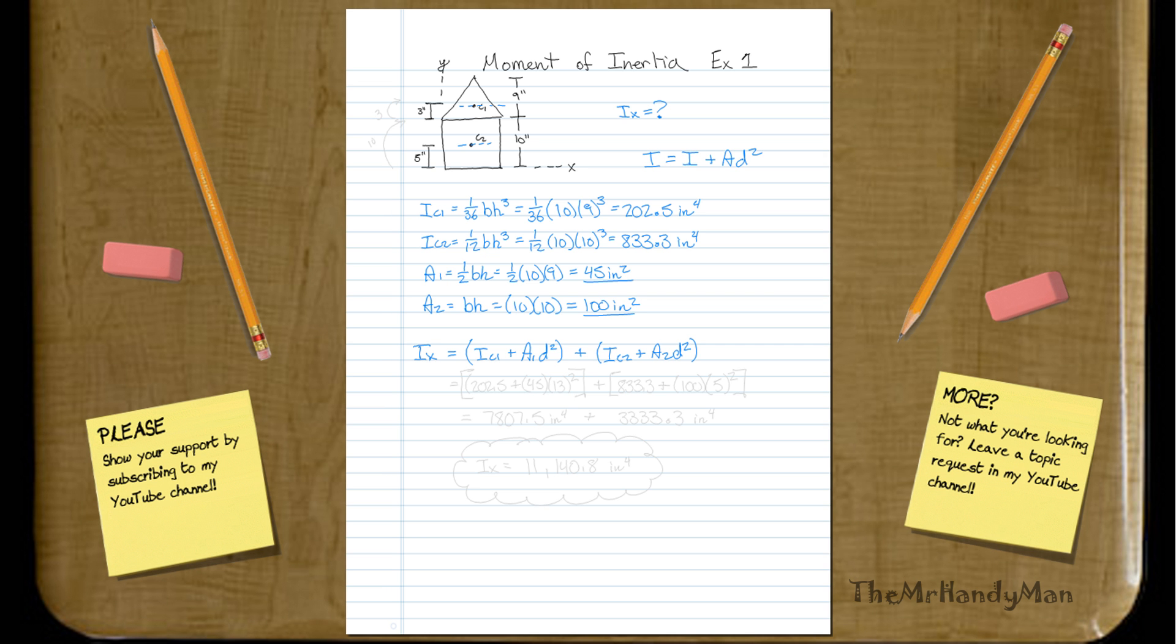Okay, so that's not really too strict. We have all that information now. The inertia about the centroid of the triangle is going to equal two hundred and two point five. So you have two hundred and two point five, plus the area of the triangle, which is going to equal forty-five, times d squared, which the distance between the centroid of the triangle and the x-axis is going to equal the height of the box plus the additional three, so ten plus three, that would be thirteen, thirteen squared.